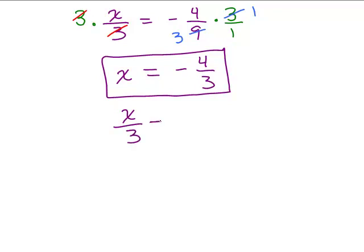Second method, you could think of this as, when you have X divided by 3, you could think of this as 1X over 3 and rewrite this as 1 third X. Instead of writing X over 3, that's the same thing as writing 1 third X. Equals negative 4 ninths.